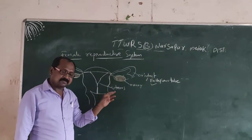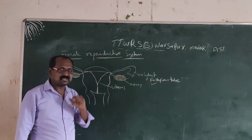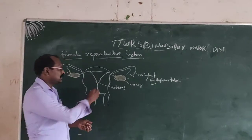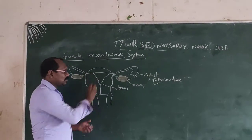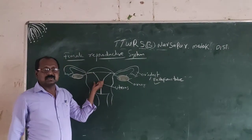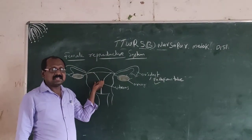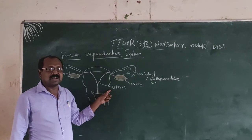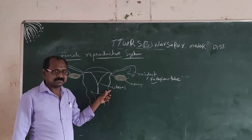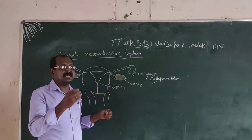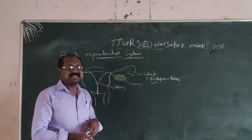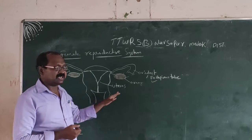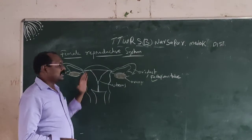After fertilization, the zygote is formed. The zygote grows into a fetus in the uterus, where the implanted embryo develops.